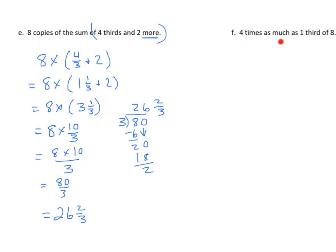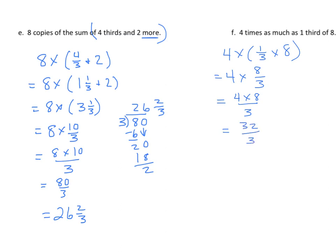The last example: 4 times as much as 1 third of 8. That gives us 4 times (1 third times 8), which equals 4 times 8 thirds, which is 32 thirds. Dividing 32 by 3 gives 10 with remainder 2, so the answer is 10 and 2 thirds.